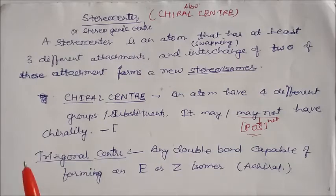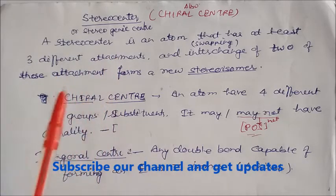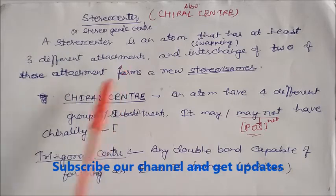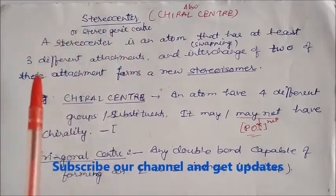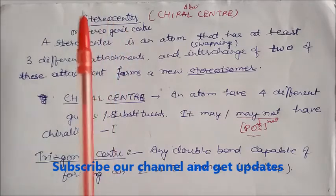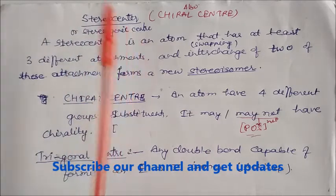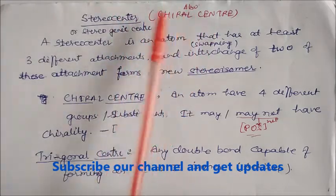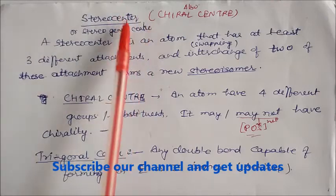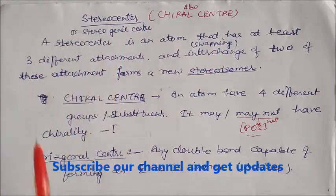Welcome. In this session we will learn about stereocenters. This is one of the important topics in isomerism. Another term is also called the stereogenic center, and sometimes we call it the chiral center. So there are three different terms and we need to clarify all these terms so that we can solve problems.